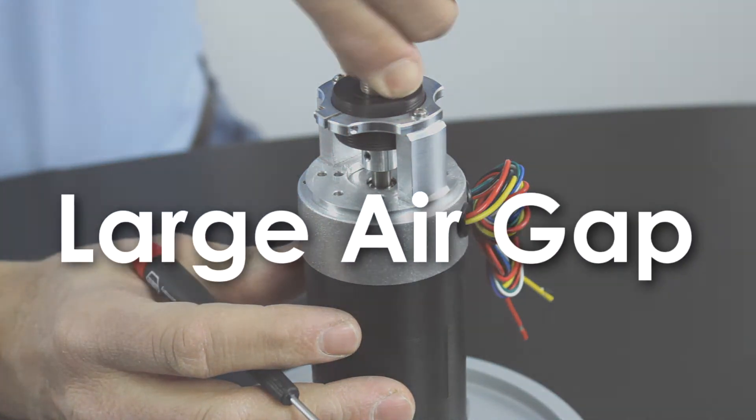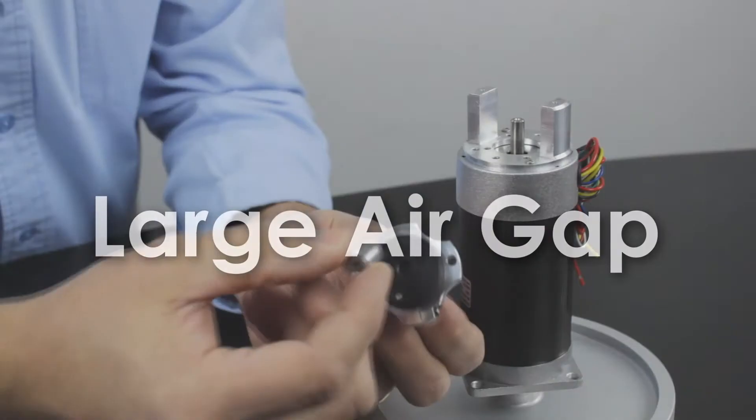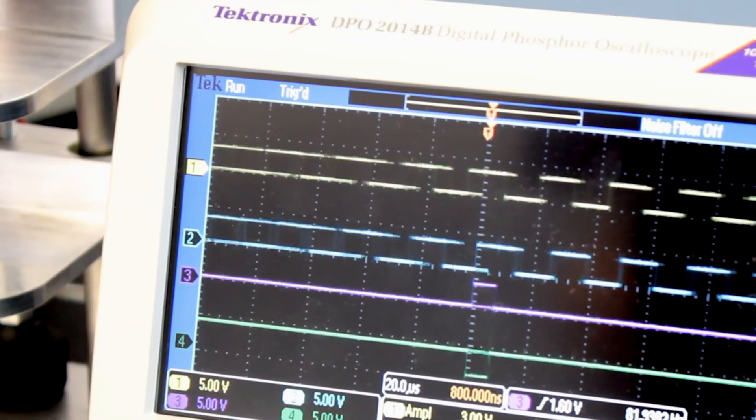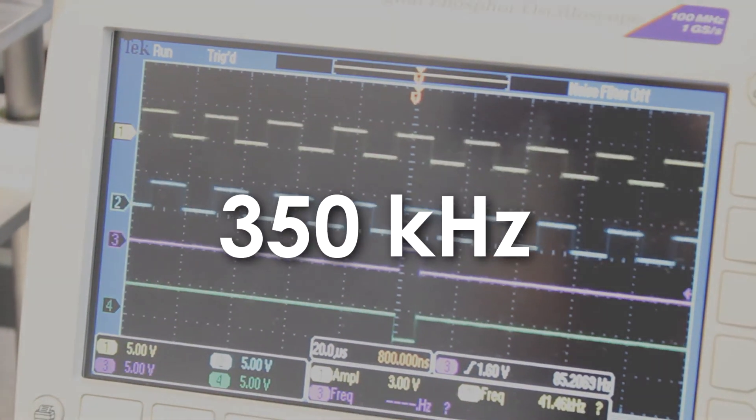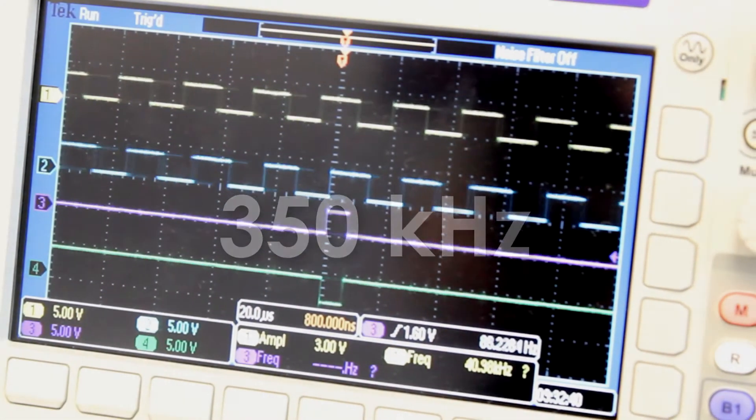In addition, it's tolerant of axial and radial shaft misalignment, and with no bearings and a max frequency of 350 kilohertz, it's suitable for high-speed applications.